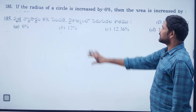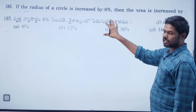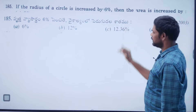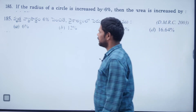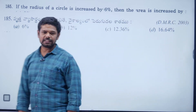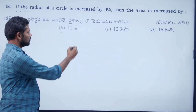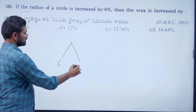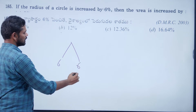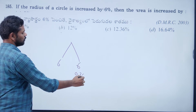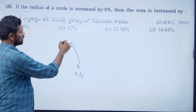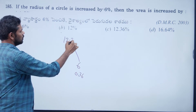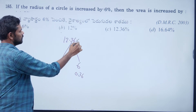Radius of a circle is increased by 6%. Then the area is increased by: 6 + 6 + (6×6)/100 = 12 + 0.36 = 12.36%.